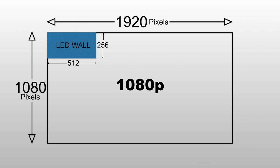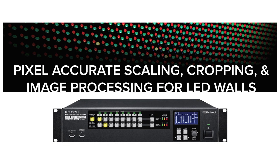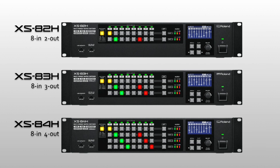Video content requires scaling to be properly displayed on these custom configurations. One of the many features found on the Roland XS switchers includes output scaling. The Roland XS AV matrix switchers come in three models, all with eight video input channels, that include a two output, a three output, and a four output model.